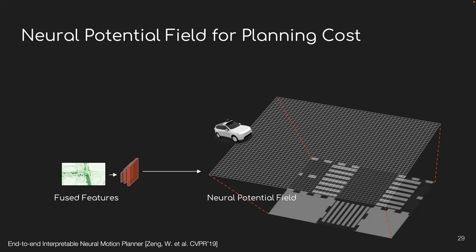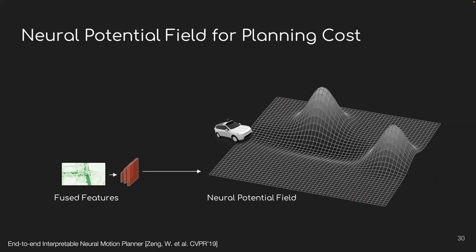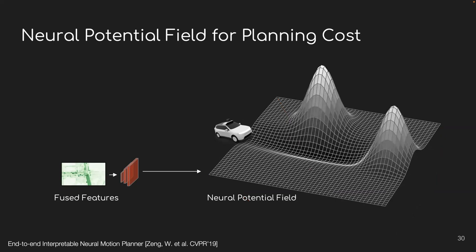So now we need to address the limitations of directly learning the actions. And our solution is to learn a neural potential field that characterizes the landscape of planning cost. Essentially, it tells us which locations induce low cost and we should drive to there, versus which locations have high cost and we should avoid. To produce such a neural potential field, we use a network to decode a 2D tensor from our backbone features. Each pixel in this tensor basically corresponds to a real-world x-y coordinates, and the value of that pixel is the cost if we actually drive to that location.